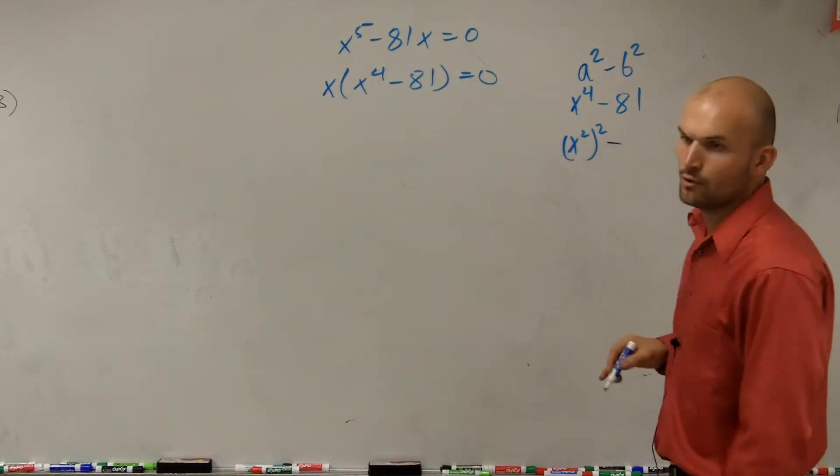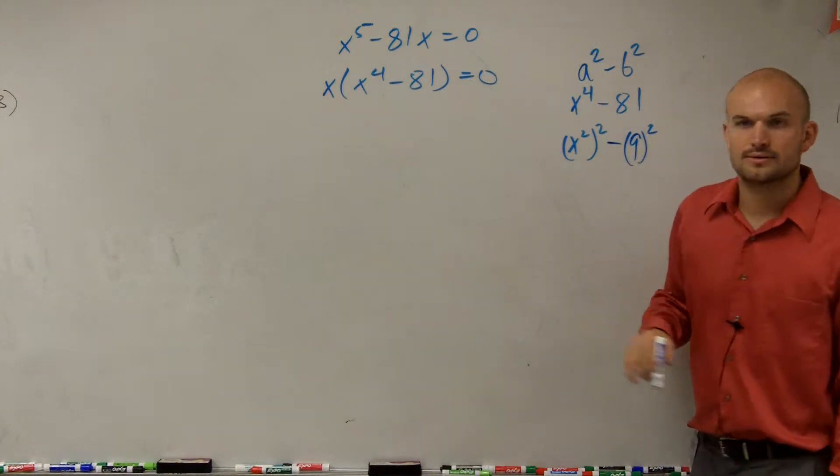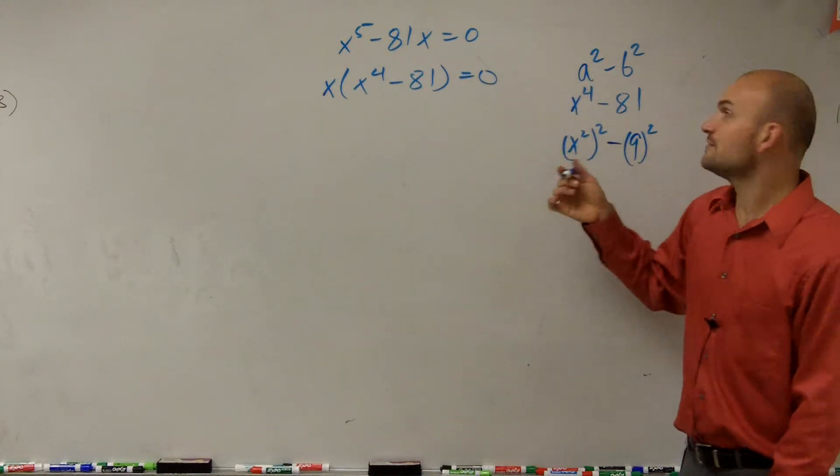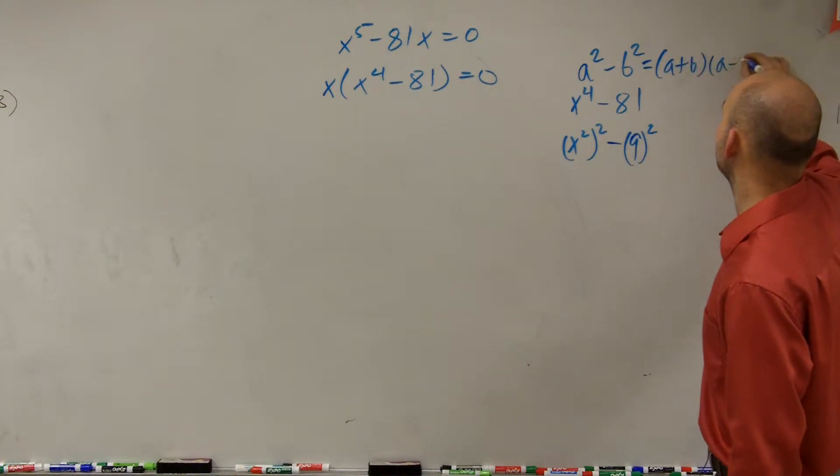And then can we write 81 as a squared number? Yeah, 9 squared, right? So remember, the difference of two squares goes in this form: a plus b times a minus b.